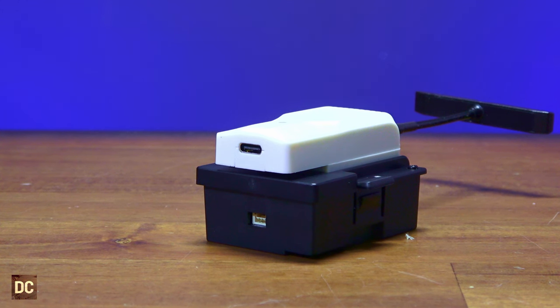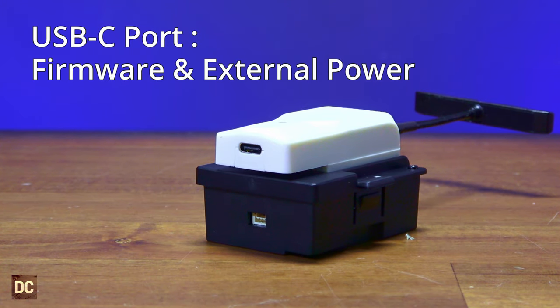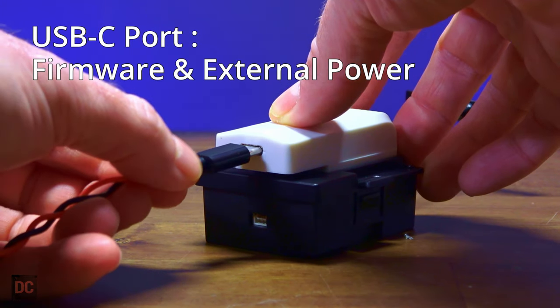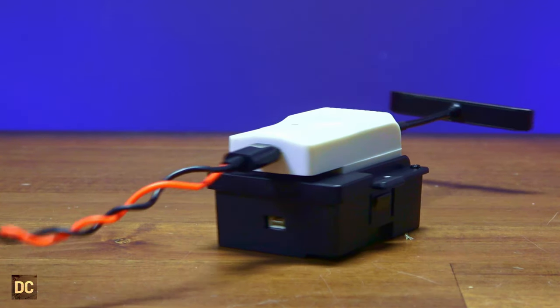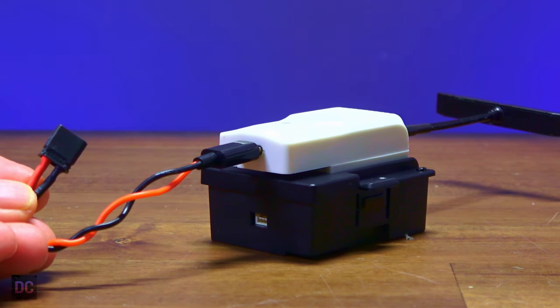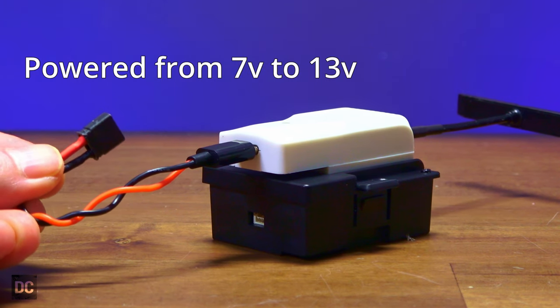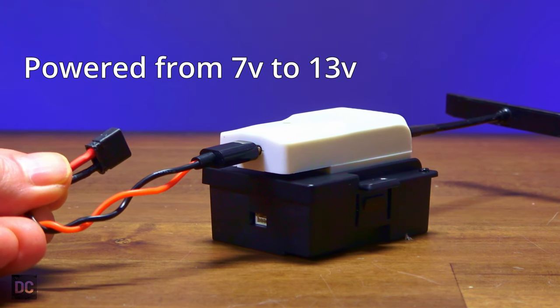On the very bottom of the module, you have a USB-C port for a couple different things. Firmware updates, as well as plugging in an external power supply. Because if you're running one watt to two watts, you're going to need a little bit of extra power. This can be powered off of a 2S battery and all the way up to 3S.